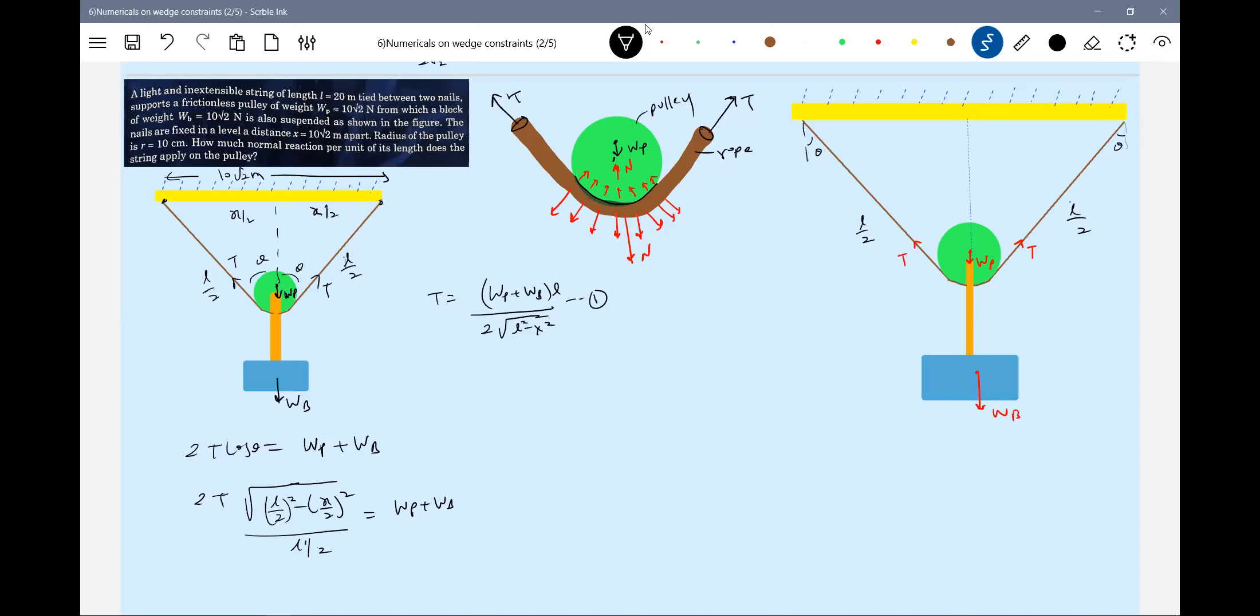Let's look at only the rope. Bring only the rope. Once again, tension will act like this. Then this will balance that particular normal contact.